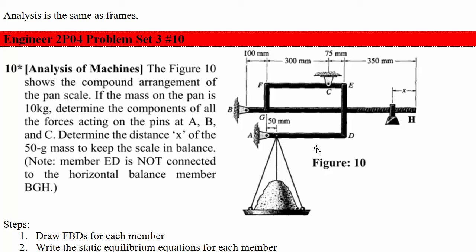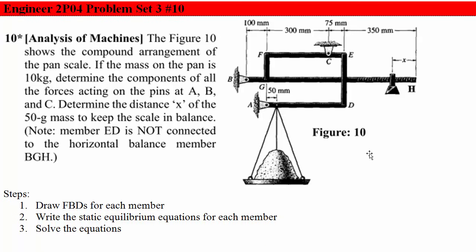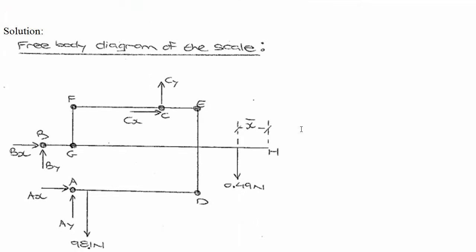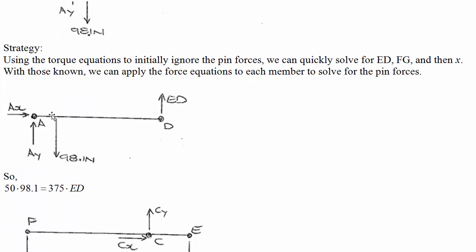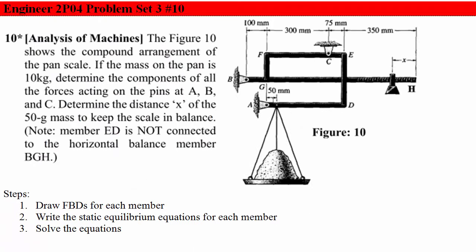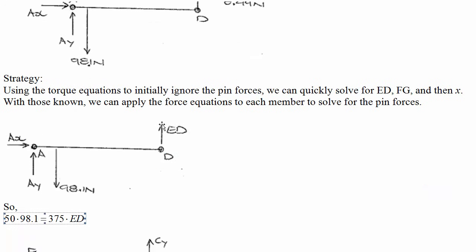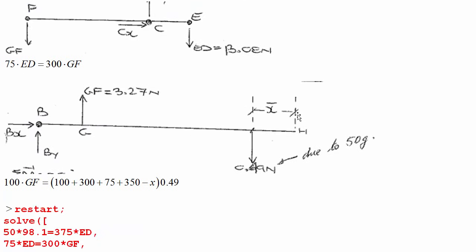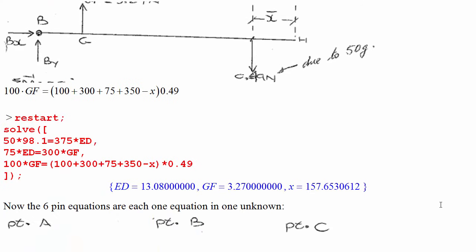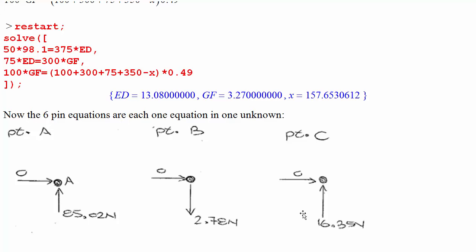So there's a trick to analyzing this machine, which is to just do the torque equations about each of the pins to figure out what the distance x is. That'll save a little bit of time to find the distance x first and then the force balance equations at each pin can be pretty quick. All right, we're not even going to use Maple for that because this trick saves us so much time. So using torque balance equation at pin A, we can just write an equation here using the distances from above to figure out what the tension in ED is, then in GF, then figure out what x is, solving those three equations and now the six pin equations are just one equation and one unknown.